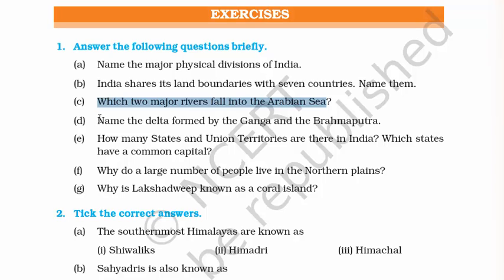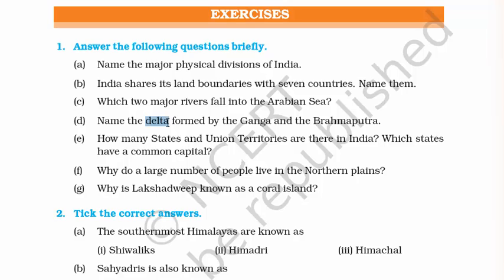Question four: Name the delta formed by the Ganga and Brahmaputra. A delta is a small landform made at the mouth of a river where it meets the ocean. The famous delta formed by the Ganga and Brahmaputra is the Sundarbans delta, which is in West Bengal.